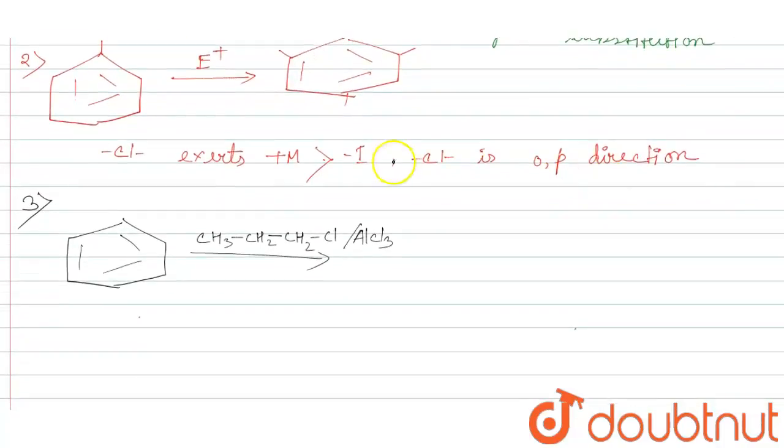Which is Friedel-Crafts alkylation. But what actually happens here is this reaction occurs through formation of a carbocation, CH3-CH2-CH2+ and this carbocation rearranges.